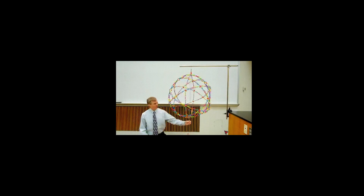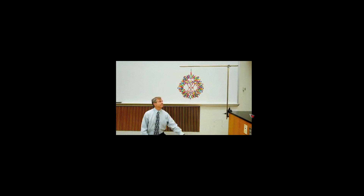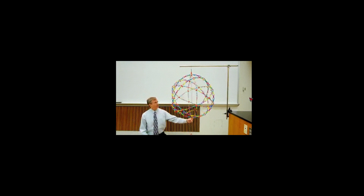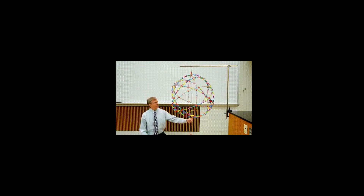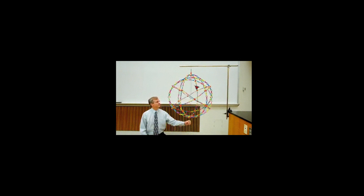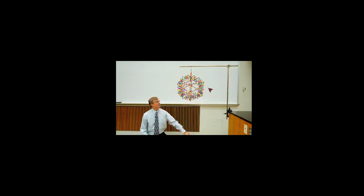This is called the Hobermann sphere, and it is an example of conservation of angular momentum in terms of r cross p. When the sphere is large it rotates slowly. Since there is no external torque acting on it — nothing pushing it to spin or stop — the angular momentum is conserved. As the sphere shrinks, r decreases, so linear momentum p must increase to maintain the same angular momentum, causing the angular velocity to increase and the sphere to spin faster.